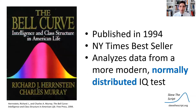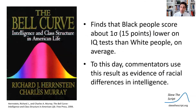That brings us to our discussion question. The Bell Curve, published in 1994, was a New York Times bestseller that analyzes data from a more modern, normally distributed IQ test — hence the book called itself The Bell Curve and put a normal curve on its front cover. The authors found controversial results: black people score about one standard deviation — 15 points — lower on IQ tests compared to white people on average. To this day, commentators use this result as evidence of racial differences in intelligence. Because of the controversial nature of this result, we might want to dismiss it entirely, but we can't dismiss results just because we don't like them — we need to investigate them further as statisticians and data scientists.